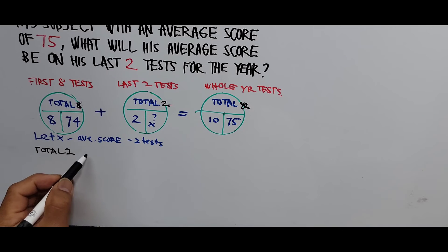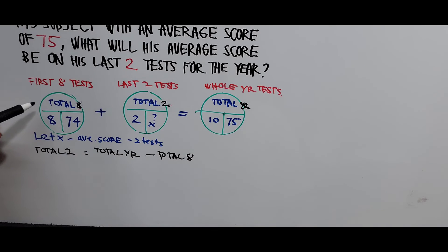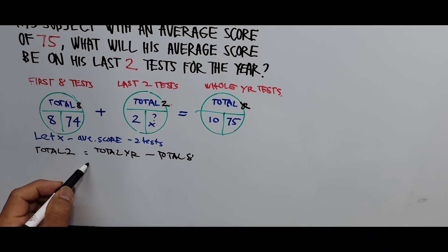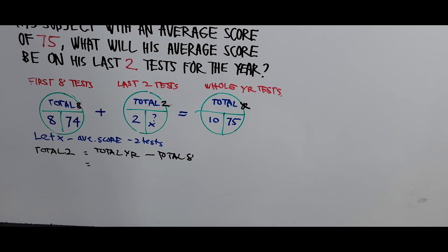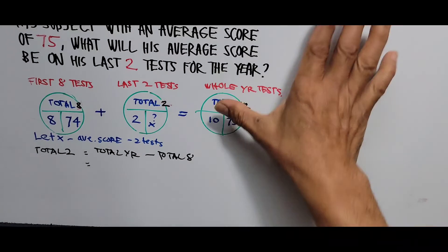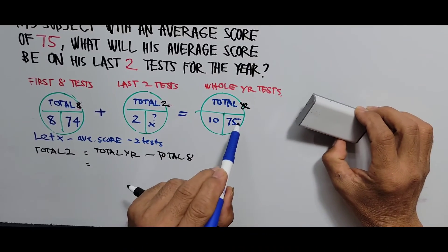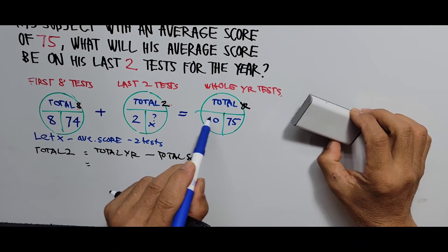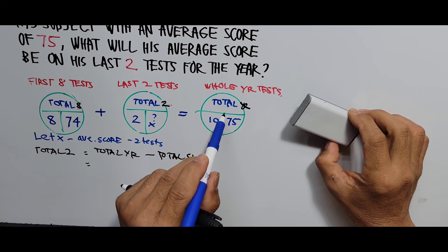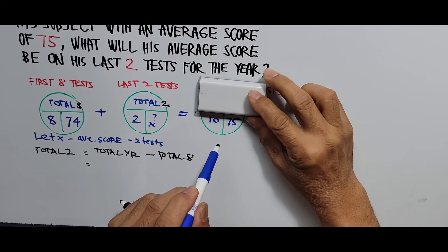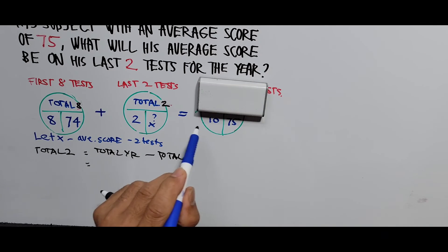The total for the last two tests equals the total for the year minus the total for the first eight tests. To find the total for the year, we look at that pie — the horizontal line indicates division and the vertical line indicates multiplication. If you cover the total at the top, all you have to do is multiply the two bottom values together.